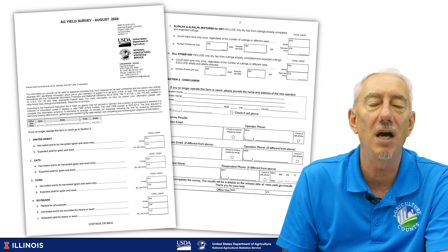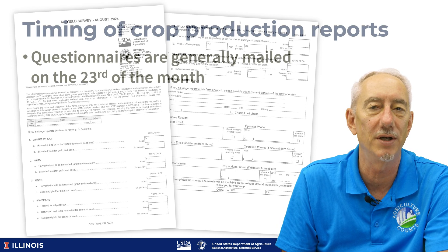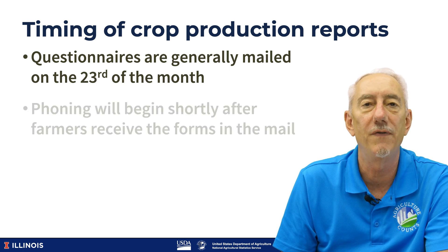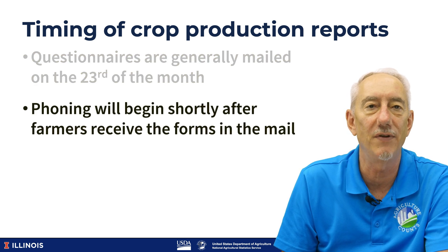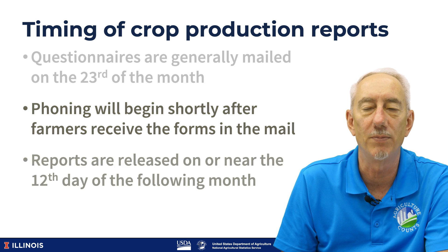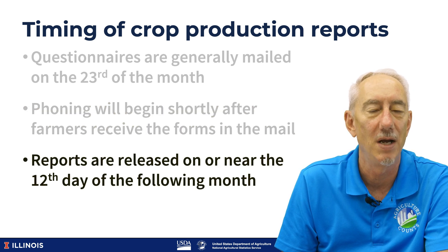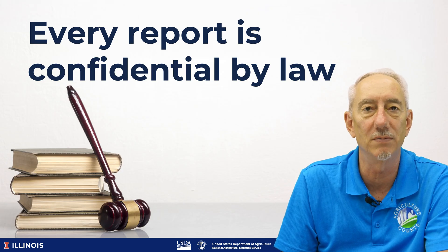The general timing of the crop production reports is as follows. Questionnaires are generally mailed on the 23rd of the month. Phoning will begin shortly after farmers receive their forms in the mail, and reports are published on or near the 12th day of the following month. It's very important to note that every report NASS receives is confidential by law, and it's also exempt from the Freedom of Information Act.